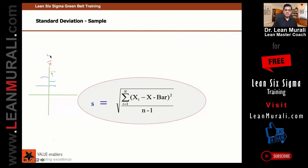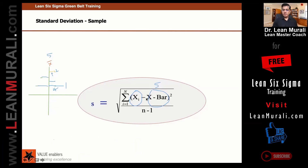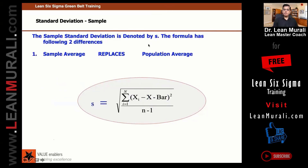So this difference — for example, if X-bar is five and a point is two, the difference is three. If X-bar is five and another point is one, the difference is four. This difference squared: whenever you square positive and negative values, the resultant will be positive. For example, three minus five is minus two, squared is four. So the sum of all that divided by n minus one. The sample standard deviation is denoted by S. The sample average replaces the population average, and n minus one replaces n — that's the only difference.